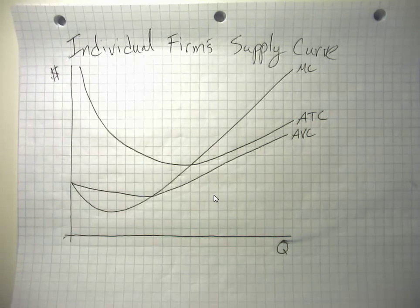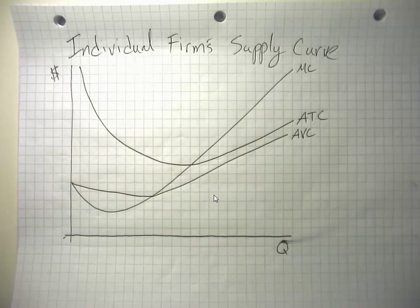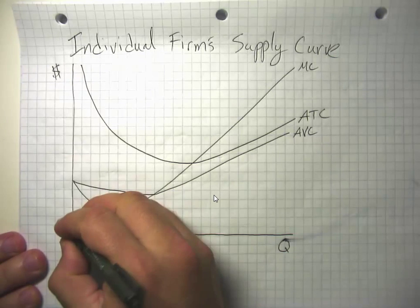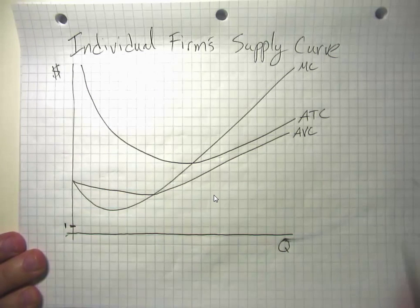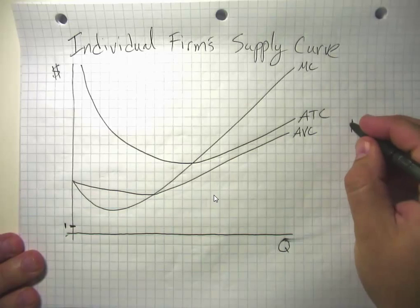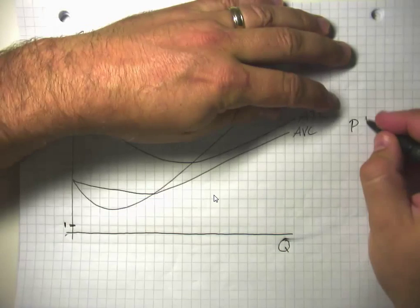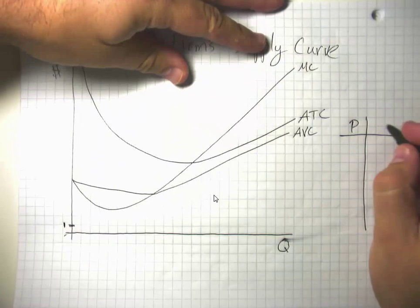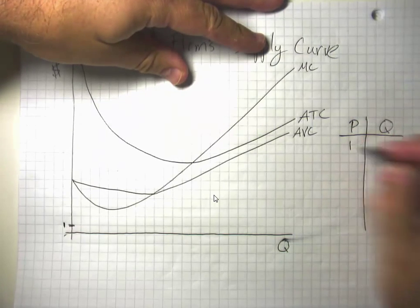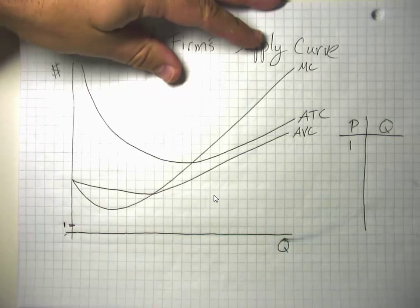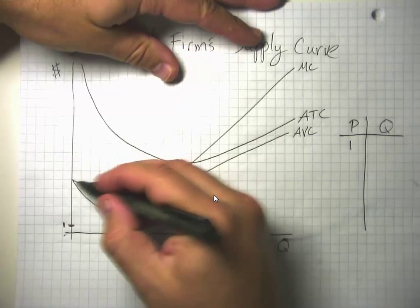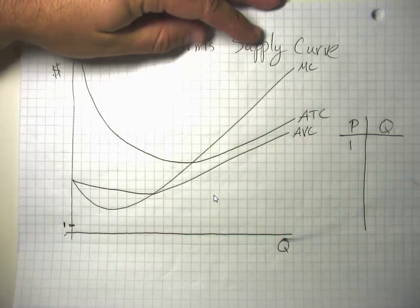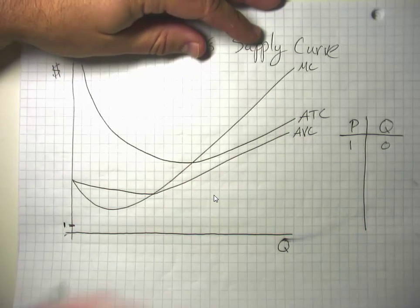Let's think about how much this firm is willing to supply at different prices. We're going to build a supply schedule here. At a price of one, this firm is not willing to supply anything. Every unit it could possibly produce has marginal cost greater than one, so it's going to be zero.